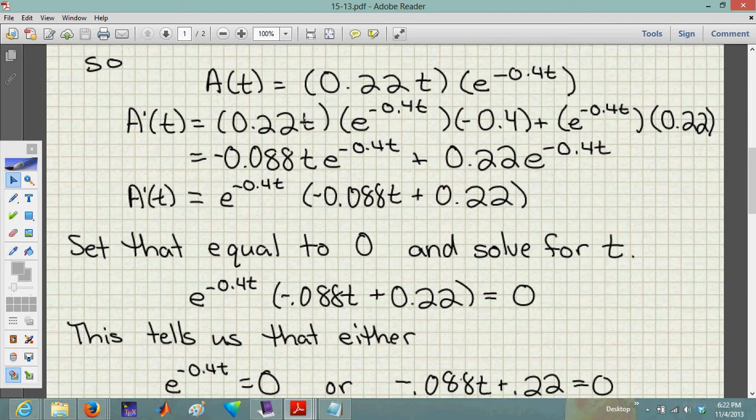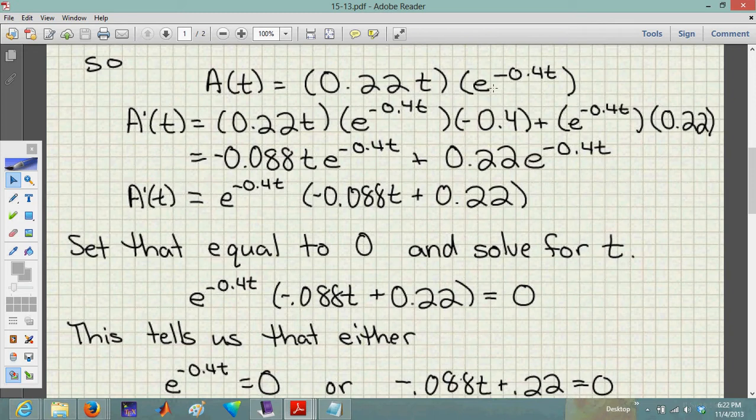That's the first function times the derivative of the second function. And the derivative of this here, we just copy it down exactly and then multiply it times the derivative of the exponent. So copy it exactly and then the derivative of negative 0.4t is just negative 0.4. Now we need to add to that the second function times the derivative of the first function. In the first function, we just had 0.22t, so we take the derivative of that. That just leaves us with 0.22.